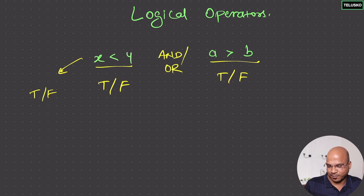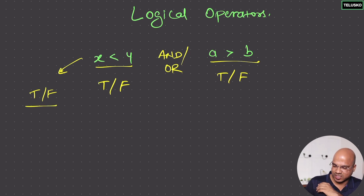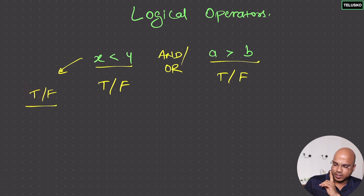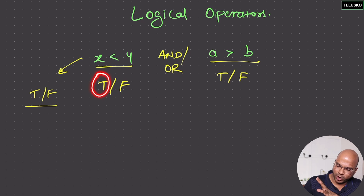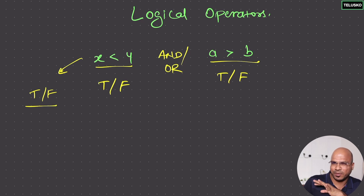The logical operator can be AND or OR. If you want your output to be true, you can say 'I want both of these to be true, then only I want true,' or you can say 'if any of these is true, I want it to be true.'